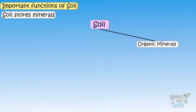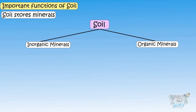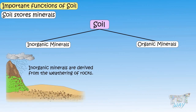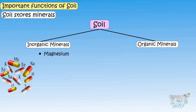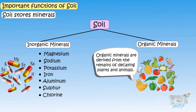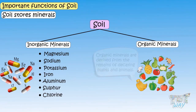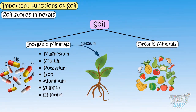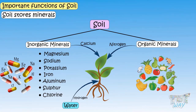Soil contains both organic and inorganic mineral matter. Inorganic minerals are derived from weathering of rocks, and they can be magnesium, sodium, potassium, iron, aluminum, sulfur, and chlorine. Organic minerals are derived from decaying plant and animal remains. Inorganic minerals provide calcium to the plant, whereas organic minerals provide nitrogen. Water provides hydrogen to the plants, and air provides carbon dioxide to the plants.